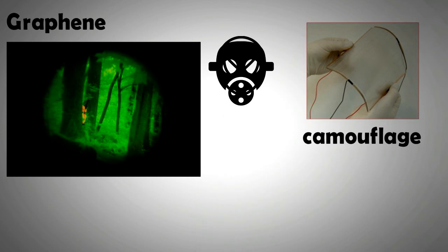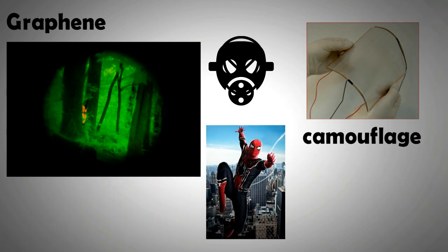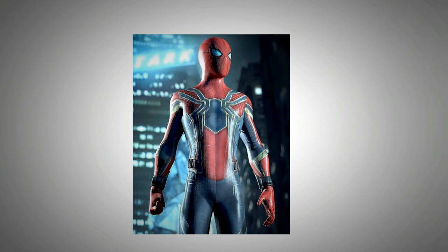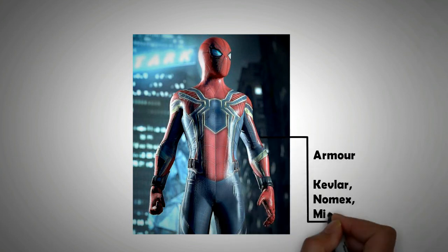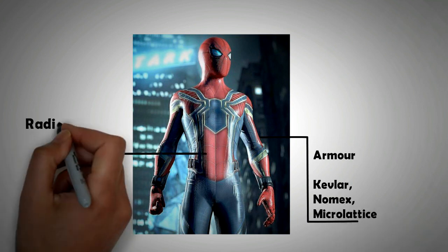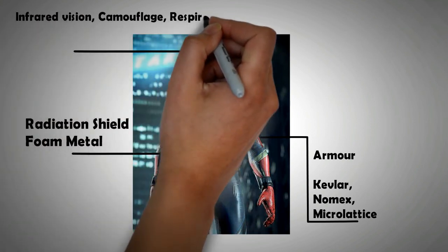As for Spider-Man's wall sticking ability and web slinging, we have already discussed that in our earlier video. Just to recap, with today's tech Spider-Man suit gets its armor capability from layers of Kevlar, Nomex and microlattice. It can use foam metal for radiation shielding. It can also use graphene for infrared vision, camouflage and protection from inhaling airborne chemicals.